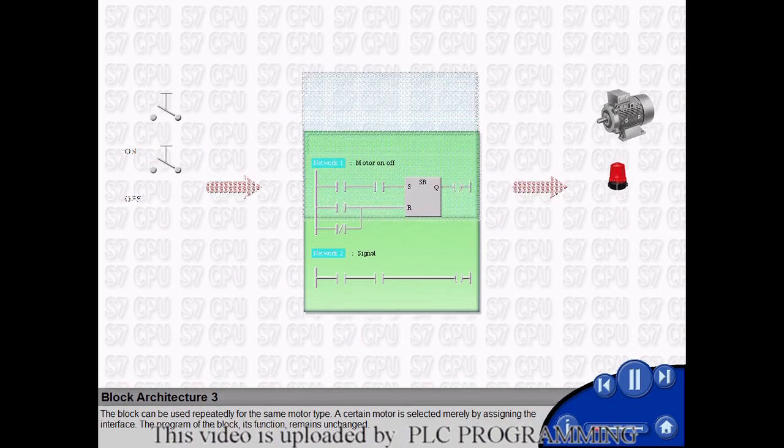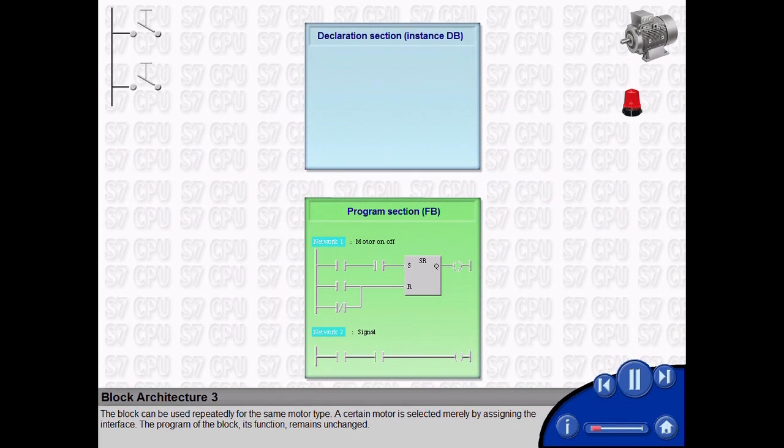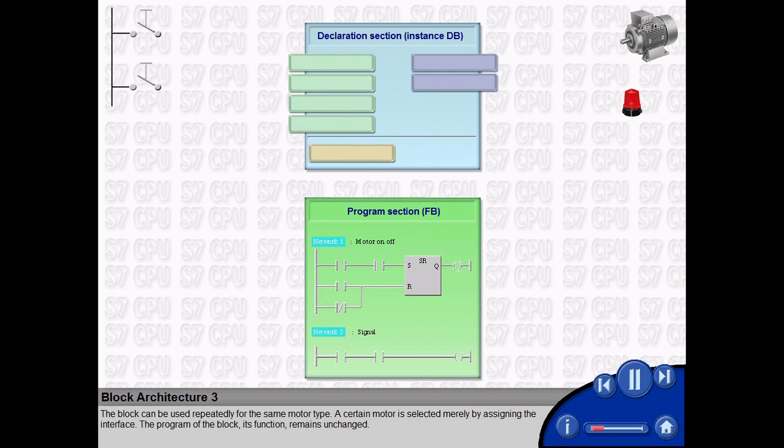The block can be used repeatedly for the same motor type. A certain motor is selected merely by assigning the interface. The program of the block, its function, remains unchanged.